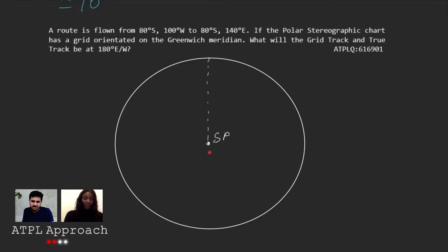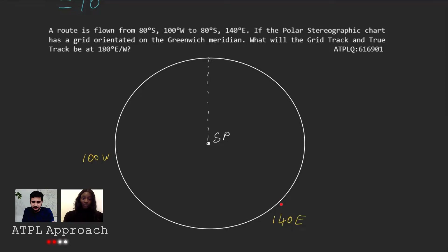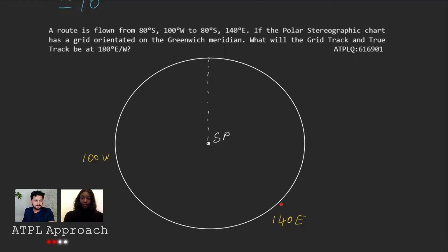You've already got a pointer selected, so that's good. Would it be like somewhere here? That's exactly right. So you know this is 90, so we just go a bit more. So we mark it in yellow — 100 west. Good. And where's 140 east going to be? 140 east — somewhere here. And we're going from where to where? We're going from west to east. So left to right or right to left? Left to right.